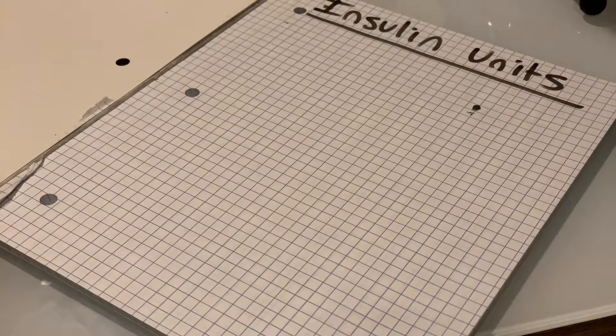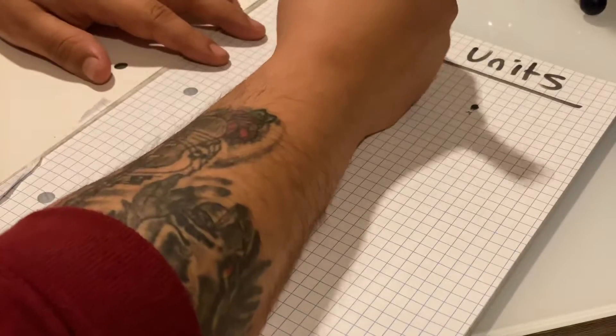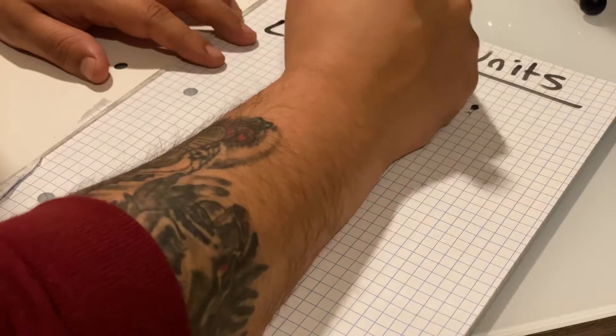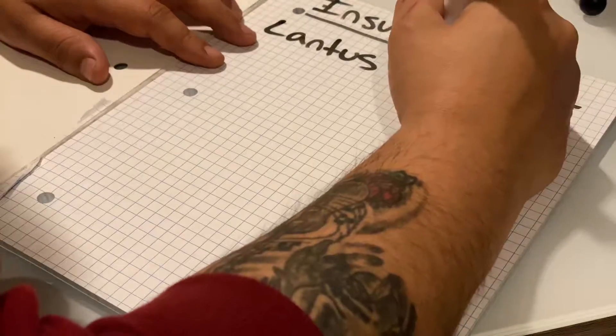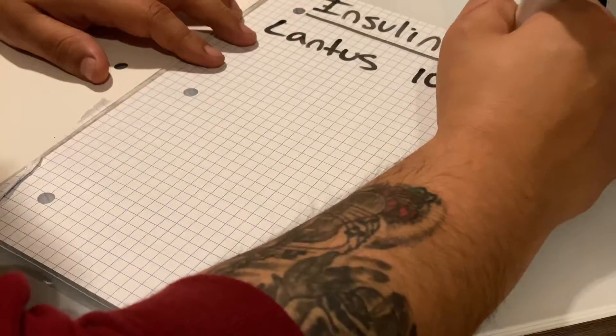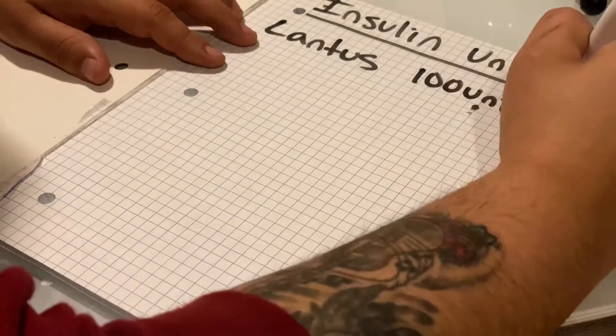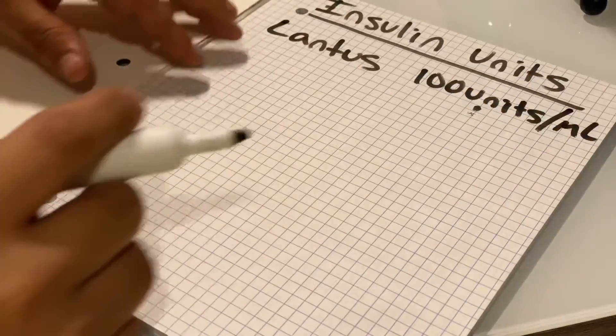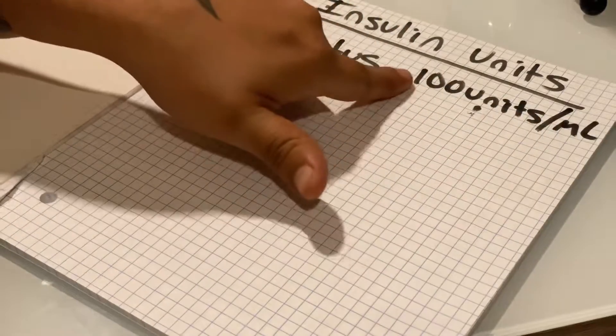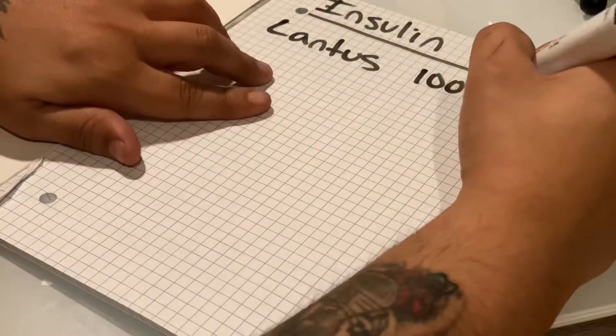We use Lantus a lot in the pharmacy. Lantus usually comes in the strength of 100 units per milliliter. That means for every milliliter, we have 100 units.